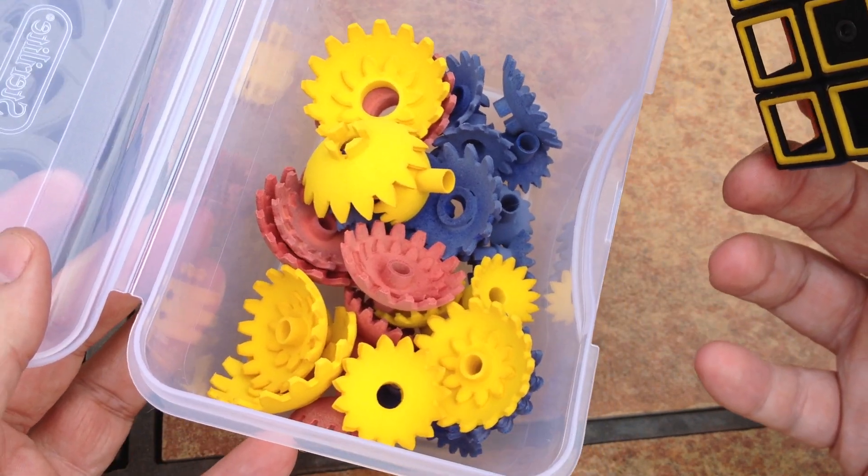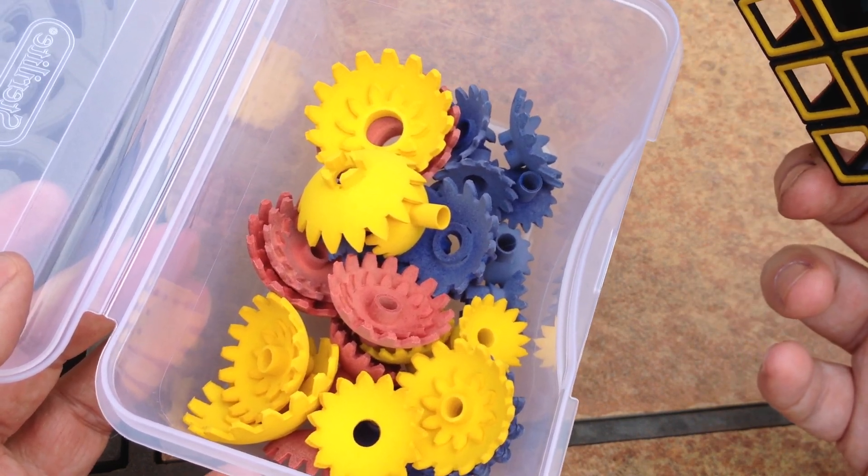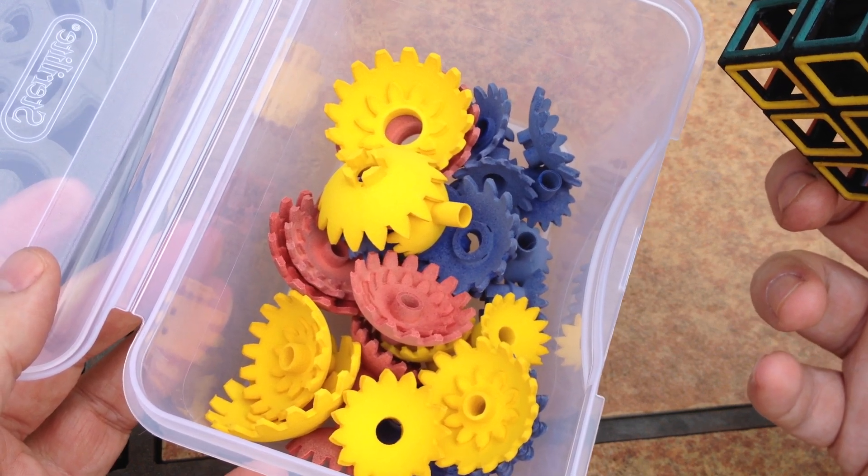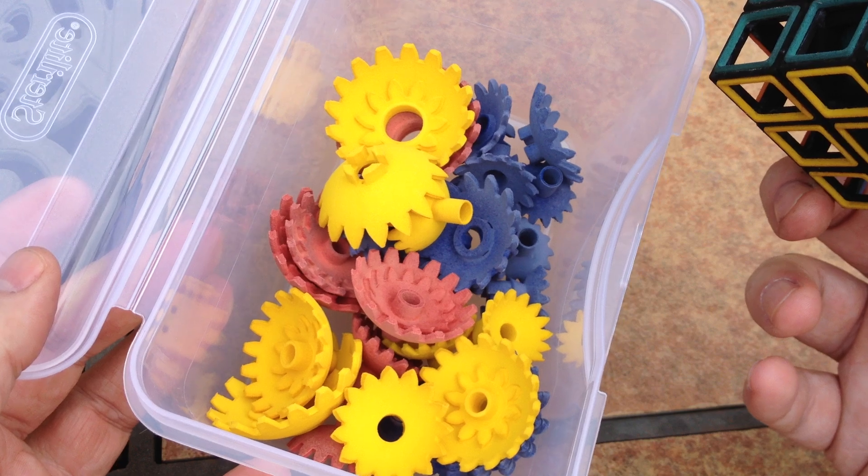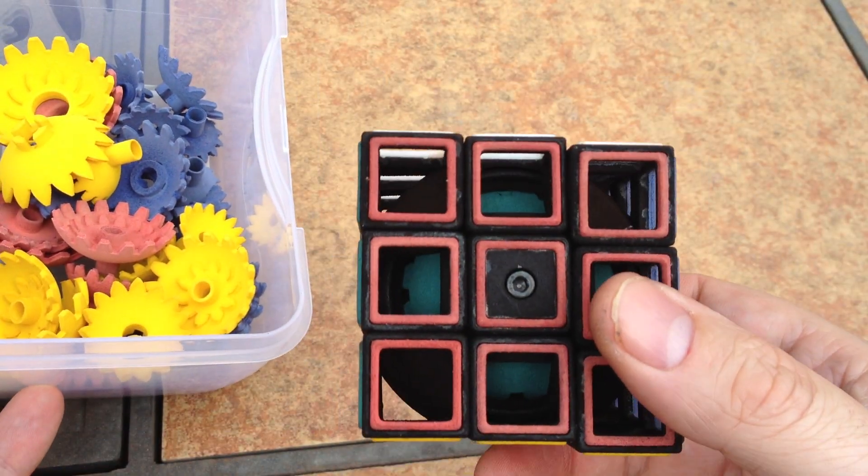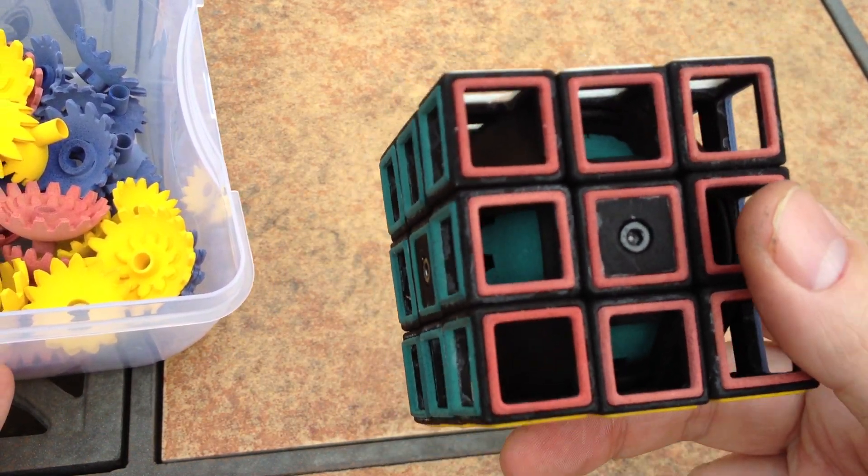What the colors here mean is the blue gears are the ones that are used for the one-to-one ratios. The red gears are the one-to-two ratios. The yellow gears are the one-to-three ratios. And the green gears, which I have in the cube now, are for one-to-four ratios.